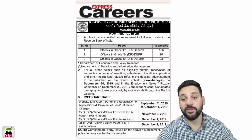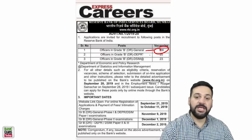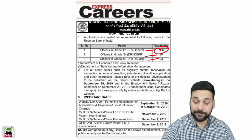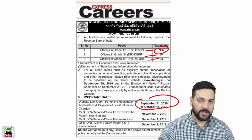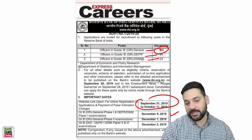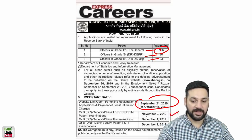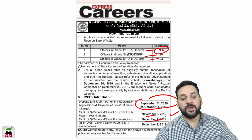This is the notification. So 156 vacancies for Grade B general, DR and 20 for DBR and 23 for DSIM. These are the dates: 21st of September to 11th of October you can apply, and 9th of November is the date when you can appear for that exam for Phase 1. 1st December is the Phase 2 exam date.